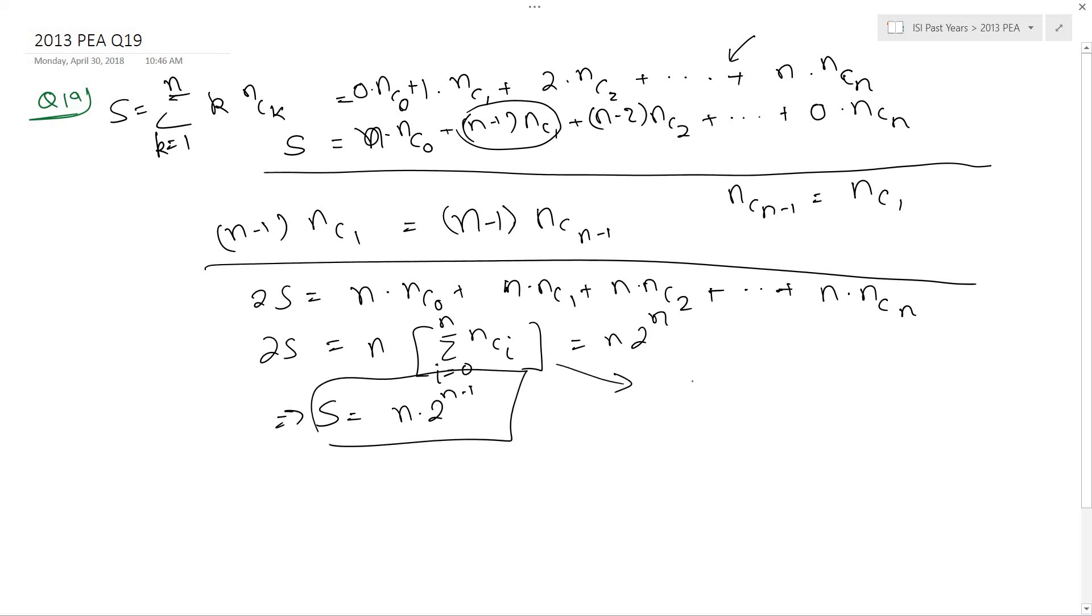Also, if you don't know the summation of this sequence, the summation is easy to work out. Summation n c i where i goes from 0 to n is the expansion of 1 plus 1 to the power n. When you do the binomial expansion of this summation, you will get summation n c i and this is simply 2 to the power n. That's your answer: n into 2 to the power n minus 1, which is your option A.